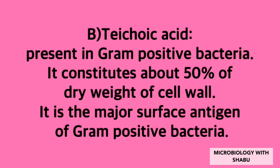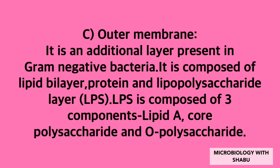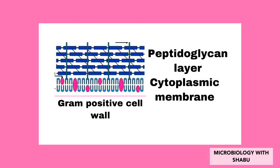Teichoic acid is present in gram-positive bacteria; it constitutes about 50% of the dry weight of the cell wall and is the major surface antigen of gram-positive bacteria. The outer membrane is an additional layer present in gram-negative bacteria, composed of a lipid bilayer, protein, and lipopolysaccharide (LPS). LPS is composed of three components: lipid A, core polysaccharide, and O-polysaccharide.